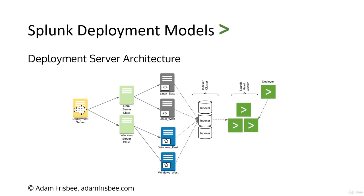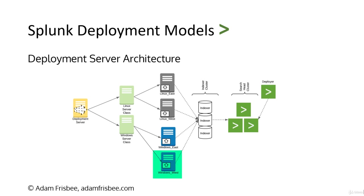In the deployment server architecture — also known as a distributed deployment — we will have different classes of servers. For example, we have the Linux server class and the Windows server class, which get different configurations based on their class. When we put a forwarder on a new device we bring online, we assign it a particular class, and then the deployment server deploys configurations based on those classes. This is a way to easily manage large groups of forwarders on different platforms. These forwarders still forward to the same load-balanced indexer cluster, and those indexers forward data onto the search head cluster, which is still managed by a deployer.